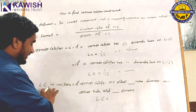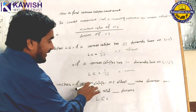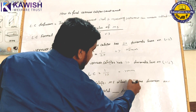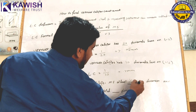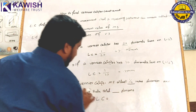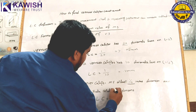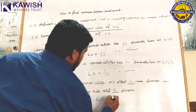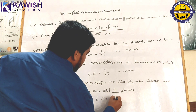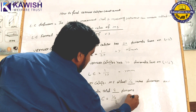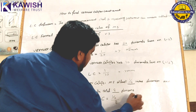For inches: if the vernier caliper main scale has a minimum value of 1/16 inch and the vernier scale has a total of 8 divisional lines, then least count equals 1/16 divided by 8, which gives 1/128 inches.